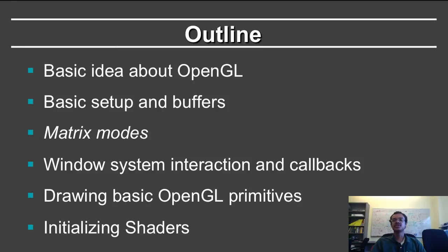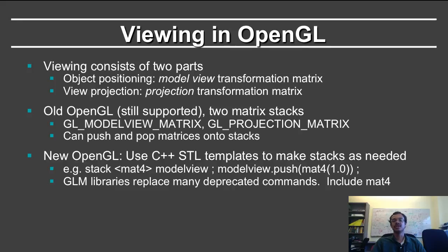The next part is to discuss matrix modes and viewing in OpenGL. You already have a reasonable idea of how this works from the previous two lectures — we did consider glu_lookat and glu_perspective, and we derived the matrices for them. In fact, you will be implementing this in Homework 1. Viewing in OpenGL consists of two parts: first, to position the object and the camera — this is known as the model-view transformation matrix — and the final step is to project the 3D world onto the image, which is known as the projection transformation matrix.